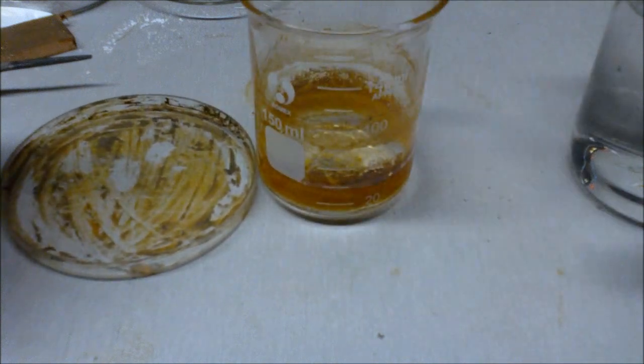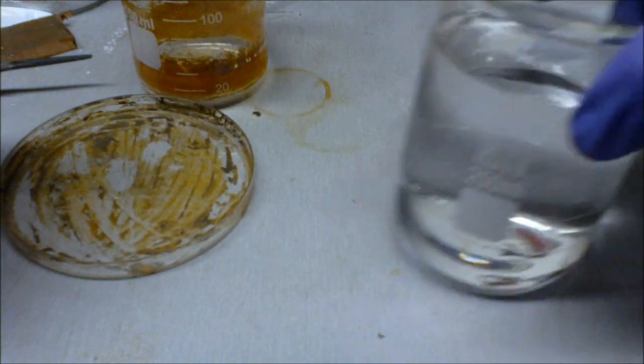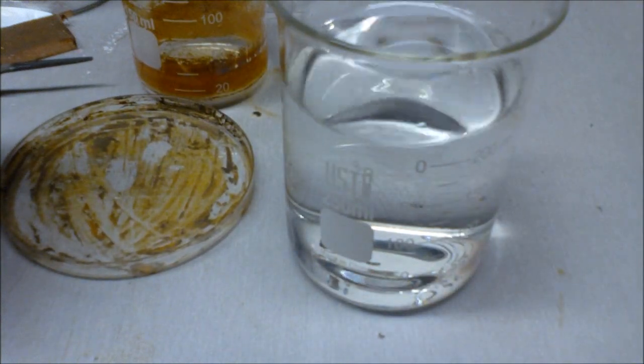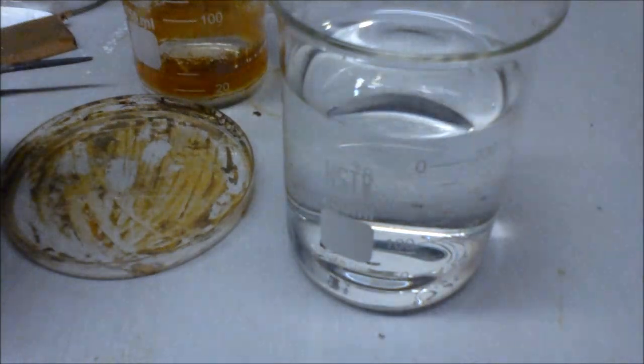Now all you have to do is make a solution of the oxalic acid in the water. This is the oxalic acid out of the container. You can see it's all white and kind of clumpy.